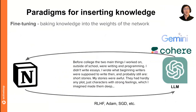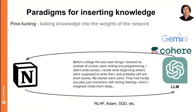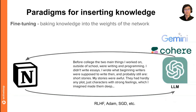We'll also briefly touch on fine-tuning, which is another paradigm for improving the model or augmenting it with both knowledge and also reasoning and style capabilities, where you actually upgrade the weights of the network — so it changes based on any sort of training data that you give it. A lot of LLM Index is focused on retrieval augmentation, but we do also think about fine-tuning, especially in the context of actually optimizing your whole RAG pipeline.